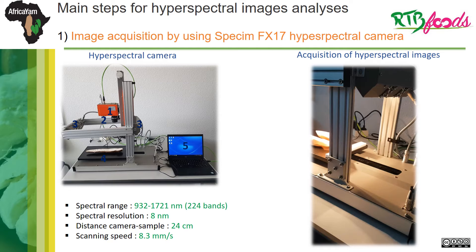Now I will show you how the acquisition of a hyperspectral image is done. The acquisition starts with the acquisition of an instrumental noise image, then the acquisition of a white reference image, and then the acquisition of the sample image. The instrumental noise and white reference images are used to correct the sample image. At the end of acquisition, the scanner returns to its first position.